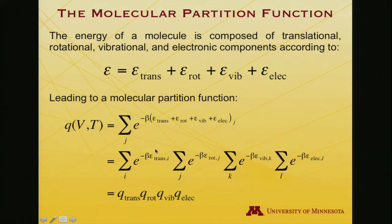So here's the partition function for translation, e to the minus beta, all the possible translational levels, all the possible rotational levels. And I'm emphasizing with different indices here, i, j, k, l, it certainly can be any combination of energy levels.